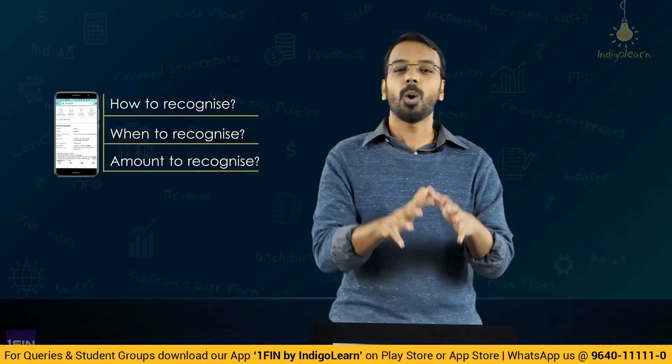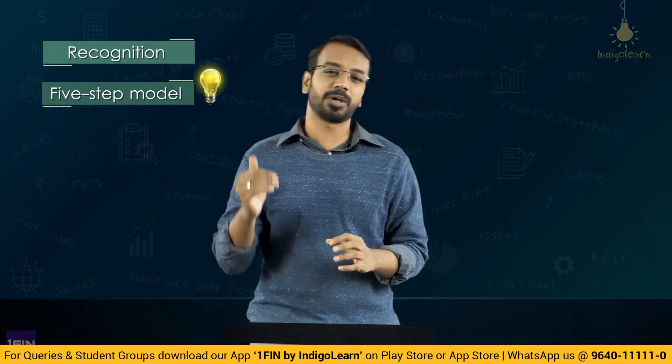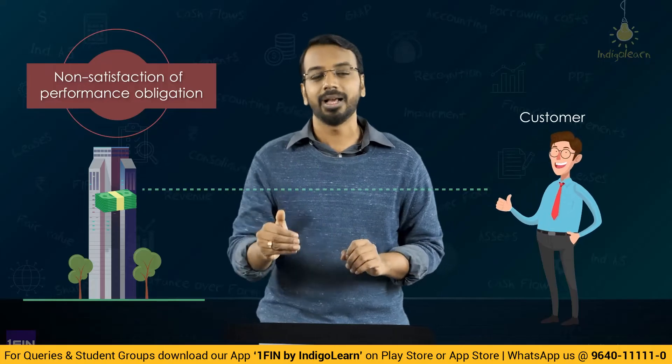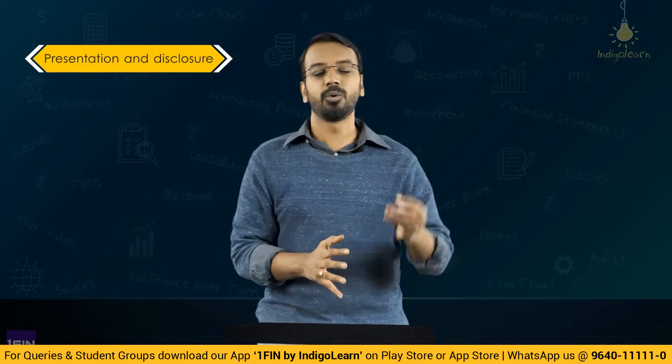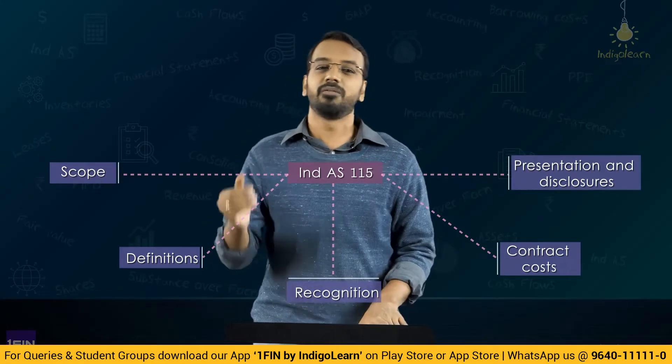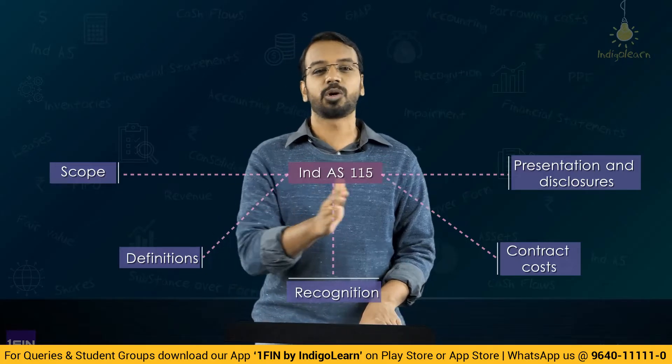When should revenue be recognized and at what amount? All of these become very important. As we move ahead in this standard, we'll understand when an entity should recognize revenue. There is a beautiful five-step model which we'll understand step by step. We'll also understand what amount to recognize, and if we are not recognizing revenue, how to account for the transaction — for instance, when a customer has paid but the entity has not yet fulfilled certain steps. We'll also cover how to present and disclose revenue, and specific aspects around service concession arrangements. It's a long standard, but we'll learn it block by block with lots of examples and practice.